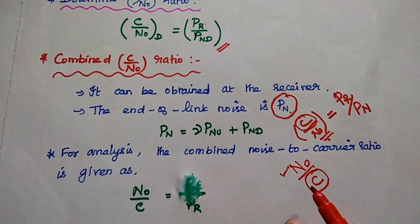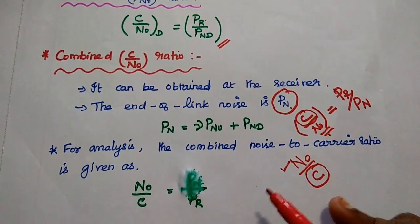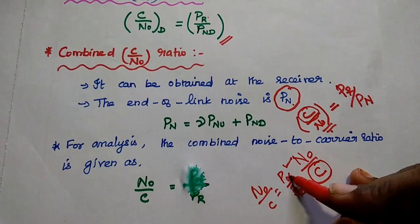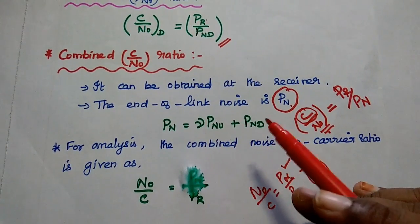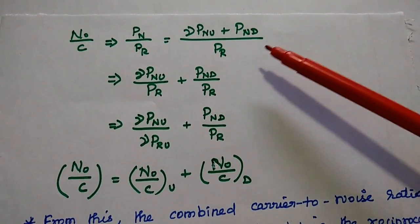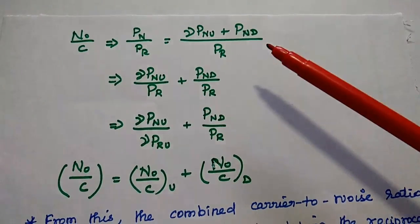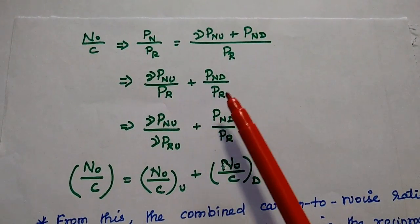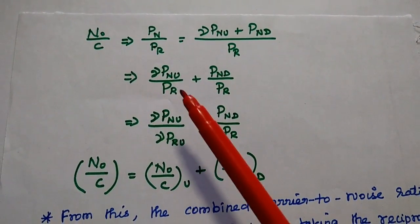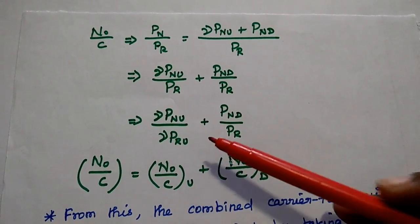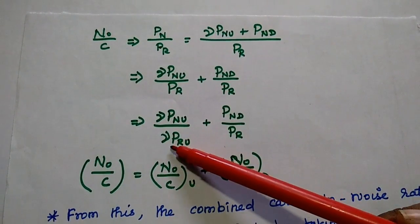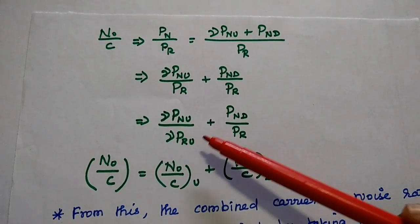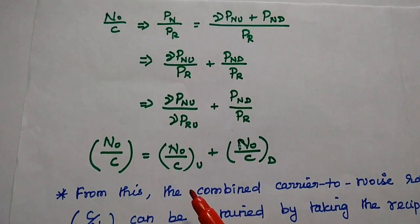Taking the reciprocal of carrier to noise ratio, the combined noise to carrier ratio is N₀/C = PN/PR for the overall link. Here PN is gamma times the uplink noise plus downlink noise. We replace the noise power as (gamma × PNU + PND) / PR. Since PR is common for both terms, this becomes gamma × PNU / PR + PND / PR. Replacing PR with gamma times the uplink carrier power, gamma cancels out to give PNU / PRU, which is the noise to carrier ratio for the uplink process.